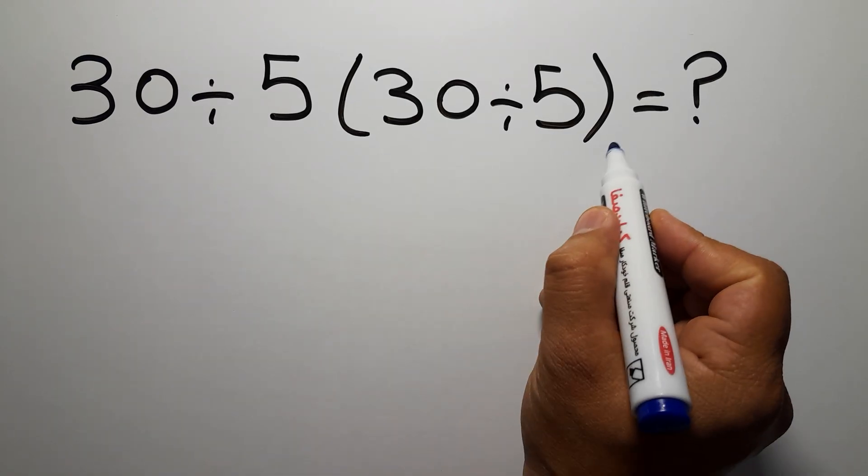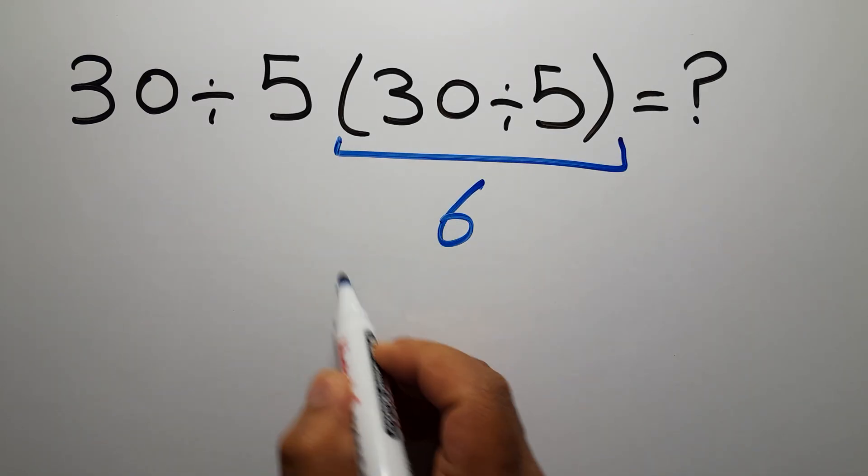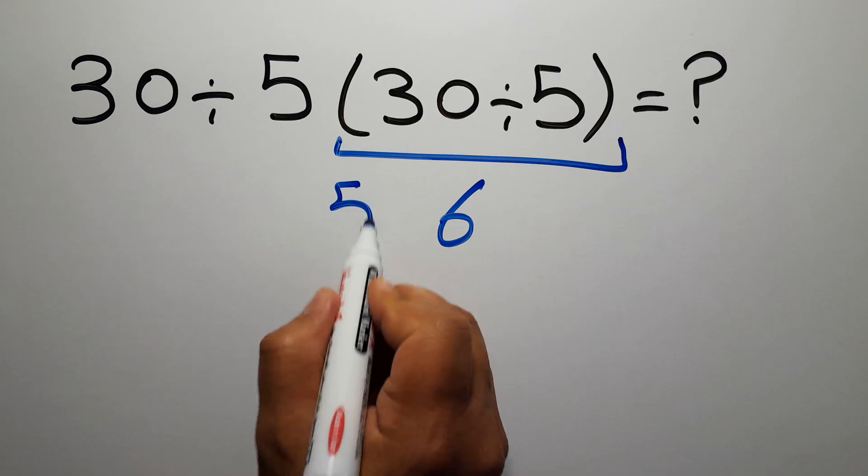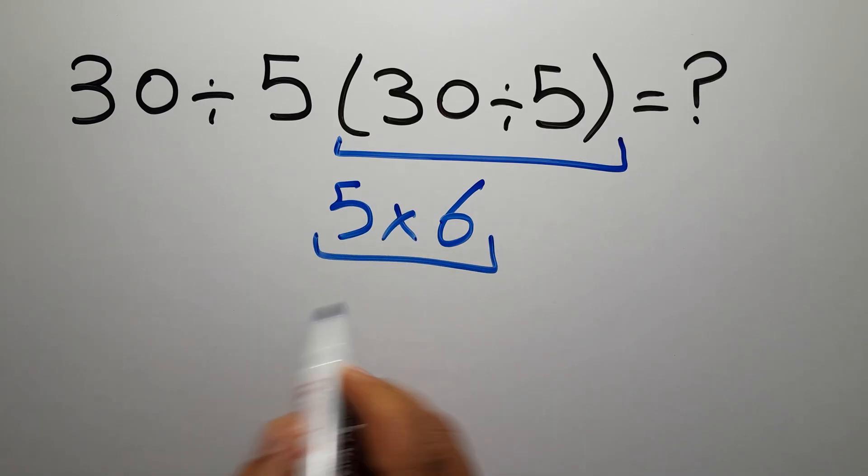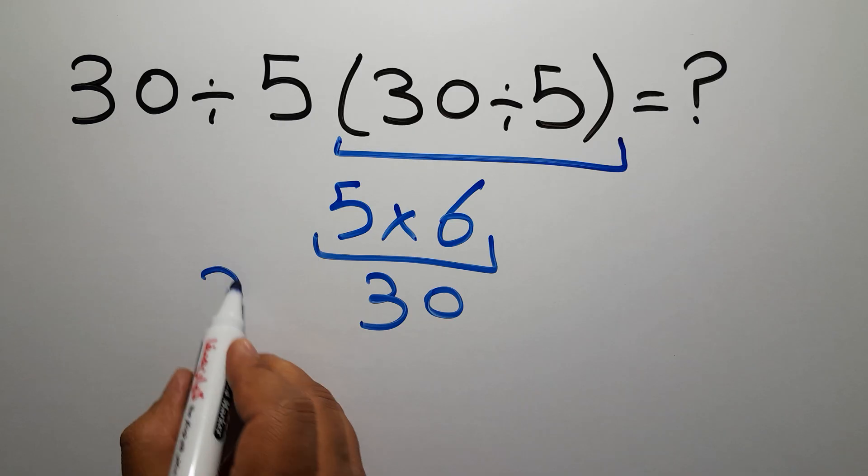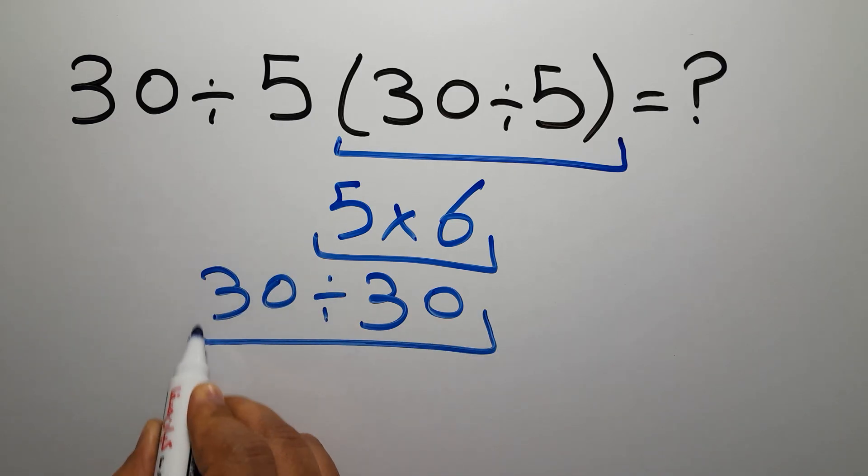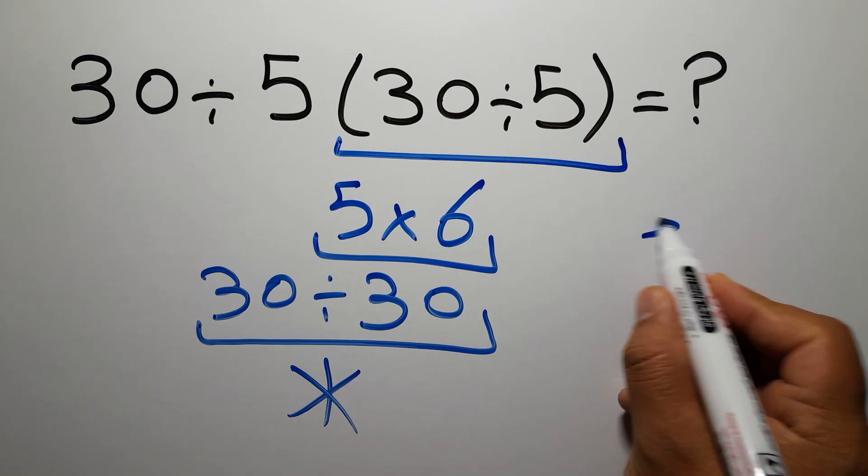30 divided by 5 gives us 6, and 5 times 6 equals 30, and 30 divided by 30 equals 1. But this answer is not correct because according to the order of operations, which is PEMDAS...